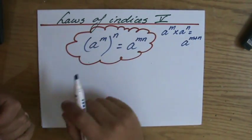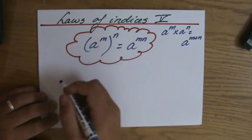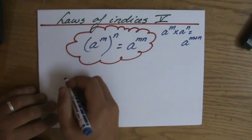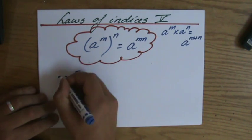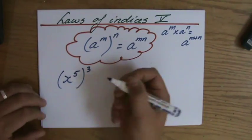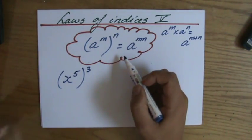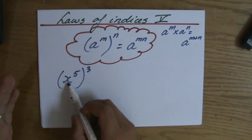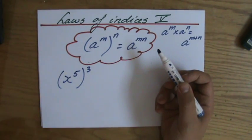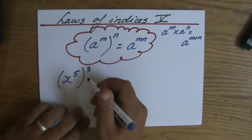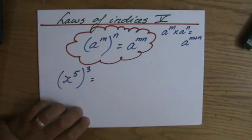I'm going to show you why we multiply those indices when we're talking about brackets, by giving this example: x to the power 5, in brackets, to the power 3. According to the third law of the indices, that is x to the power 5 times 3, so x to the power 15. That is the correct answer.